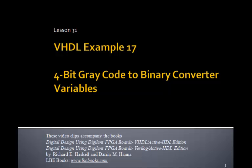This is Lesson 31, VHDL Example 17. In this example, we're going to do a 4-bit gray code to binary converter, just the opposite of the last example. We're going to introduce VHDL variables.